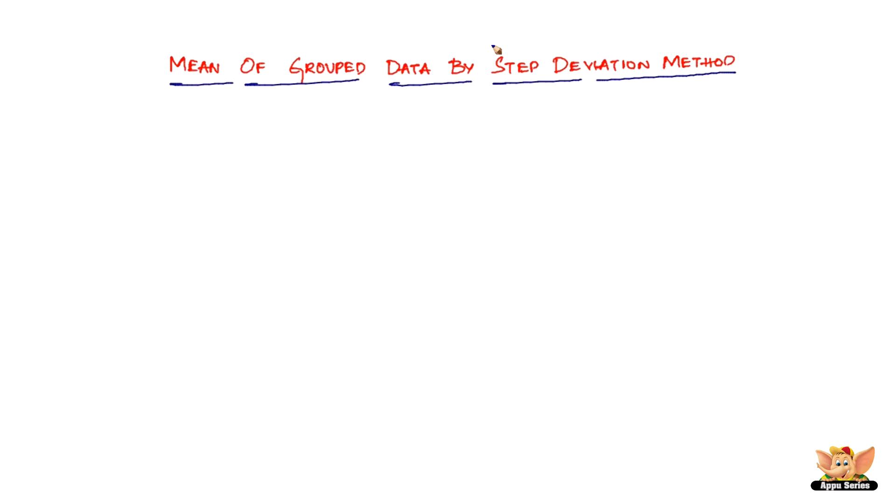In this video, let us look at mean of grouped data by step deviation method. Now what is the step deviation method and how is it different from the previous method, more specifically how is it different from the shortcut method? Well, it's not very different from the shortcut method. The only thing is when we dealt with the shortcut method...